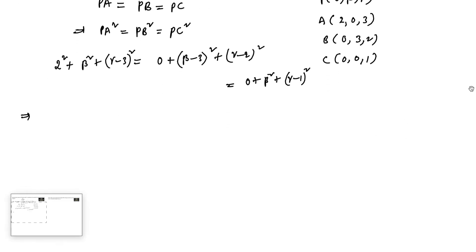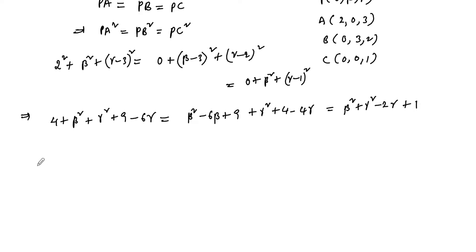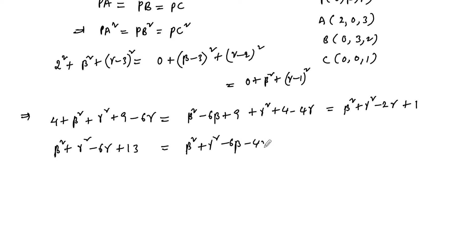Upon simplifying: PA² = 4 + β² + γ² + 9 − 6γ, PB² = β² − 6β + 9 + γ² + 4 − 4γ, and PC² = β² + γ² − 2γ + 1. So we have β² + γ² − 6γ + 13, then β² + γ² − 6β − 4γ + 13, and β² + γ² − 2γ + 1.